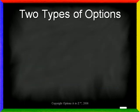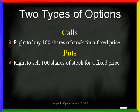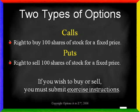Most of you know there are two types of options: calls and puts. If you buy a call option, you have the right to buy 100 shares of the underlying stock for a fixed price. If you buy a put, you have the right to sell 100 shares of stock for a fixed price. Remember, option buyers have rights — they are never required to buy or sell the actual shares of stock. However, if you wish to buy or sell the shares, you must submit exercise instructions to your broker.